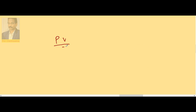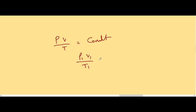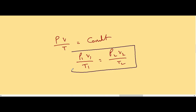Combining all three, for any given mass of gas PV/T is constant. If all three quantities are changing, we use the combined gas equation: P₁V₁/T₁ = P₂V₂/T₂.